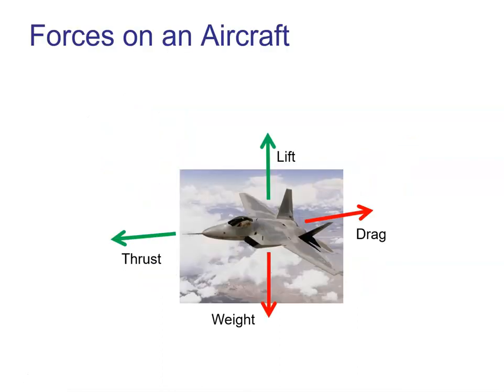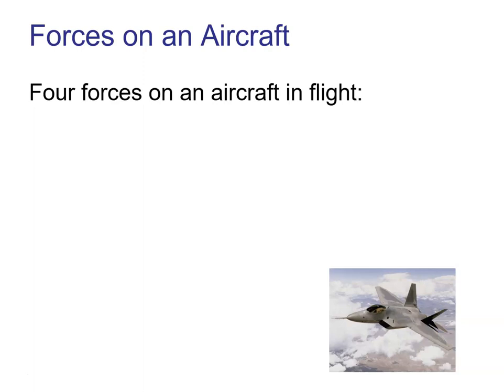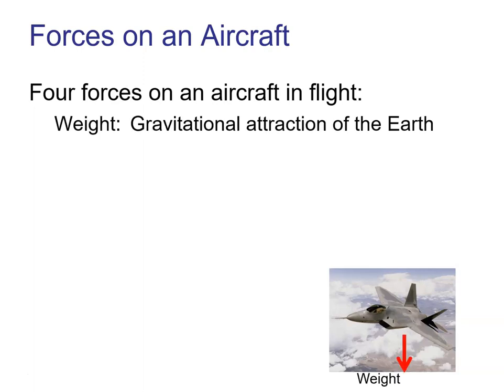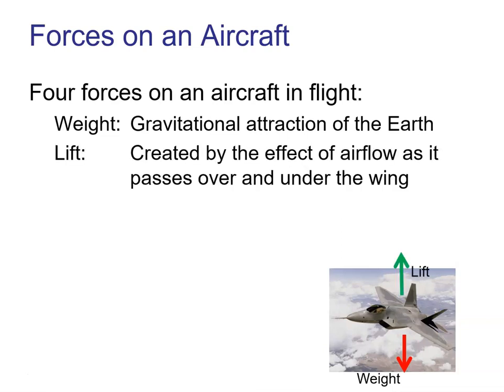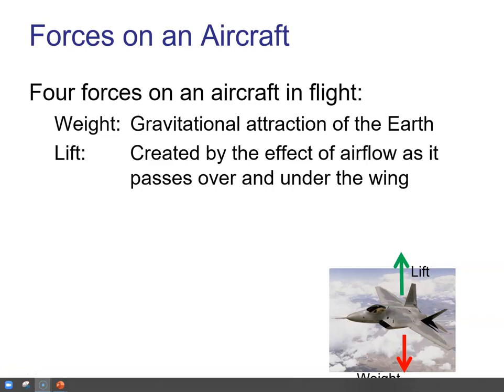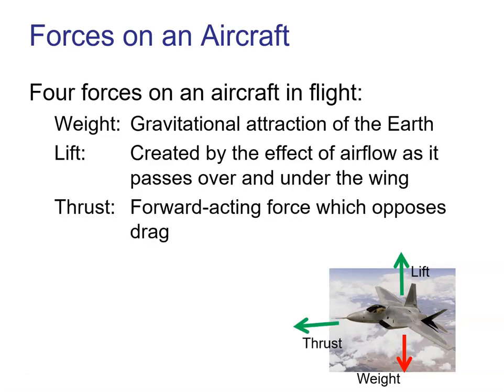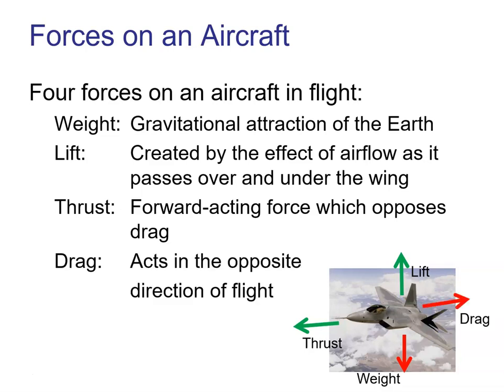There are basically four forces on an aircraft, and we're going to take a look at each of those. When an aircraft is in flight, we see a fighter aircraft with four basic forces. Weight is just mass times gravitational acceleration, and that always points toward Earth. To counteract that, an aircraft creates lift from the wings. Thrust is generated by the engines — whether jet or propeller-driven — that propels the aircraft forward, and the force that opposes thrust is drag.